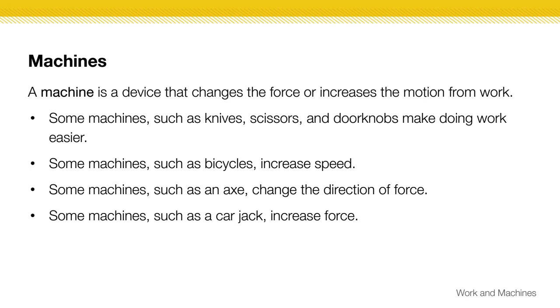Things like scissors, knives, and doorknobs make the work easier because it's less force you're doing. Things like bicycles can increase the speed of your motion. All those are examples of machines.